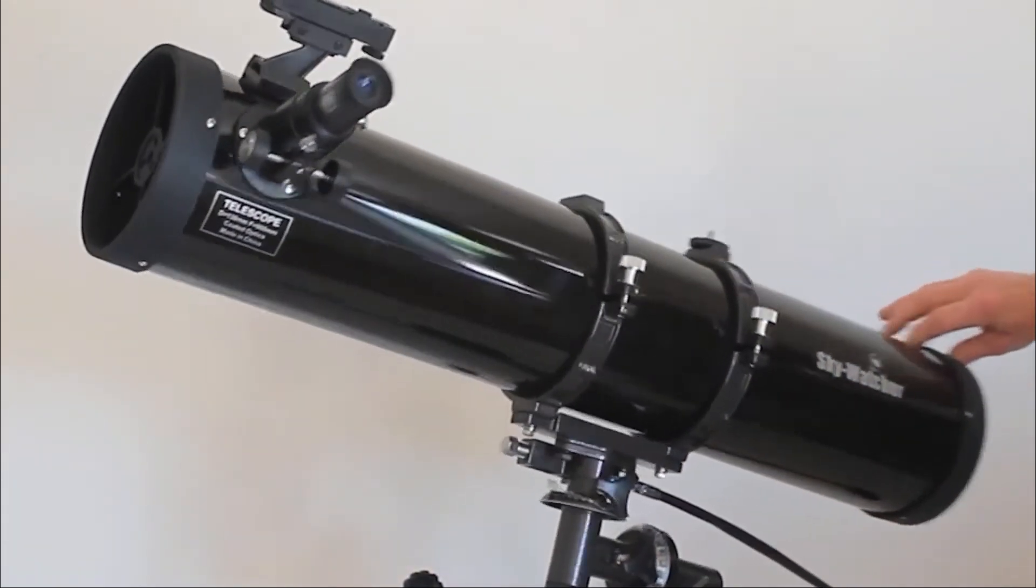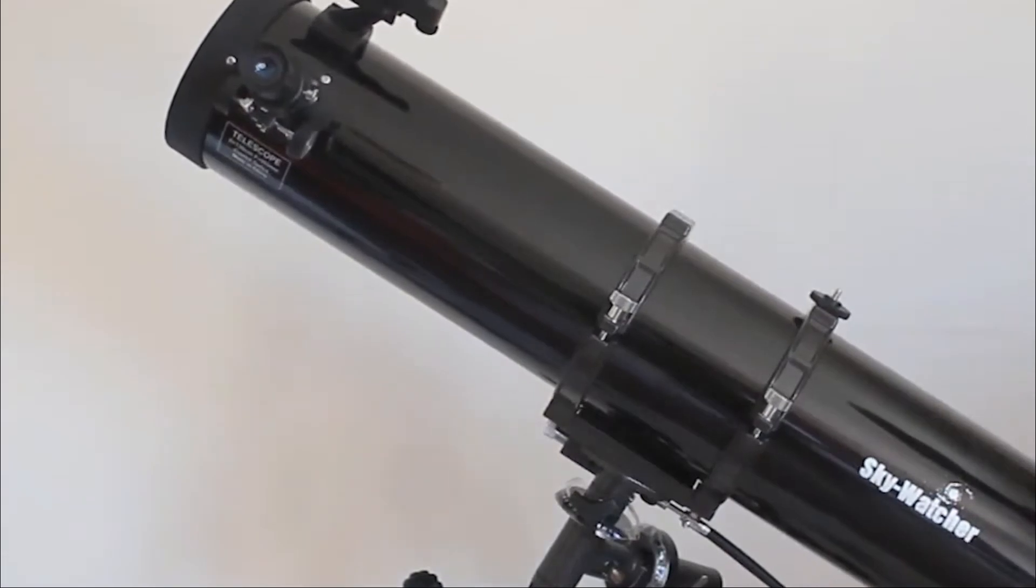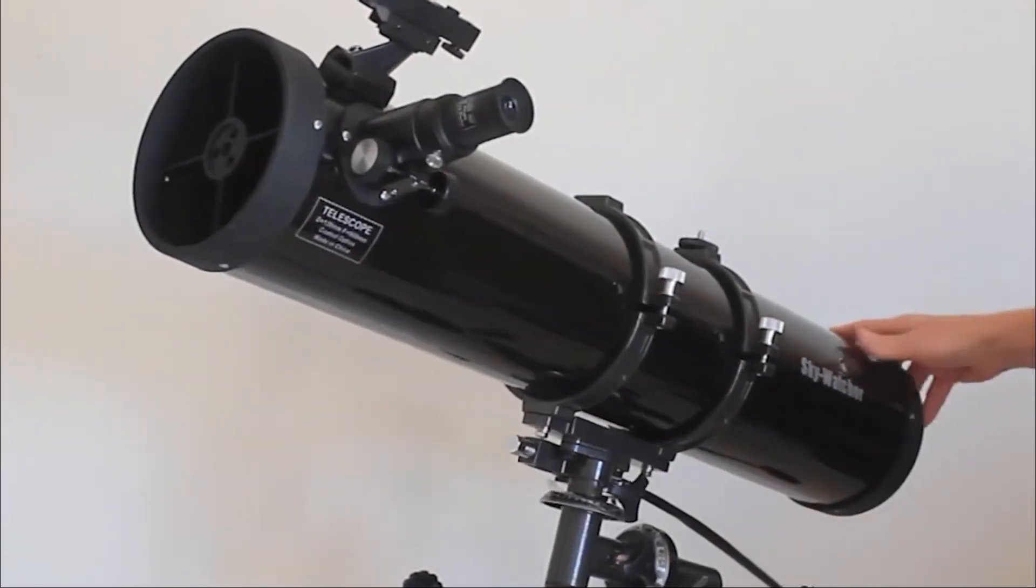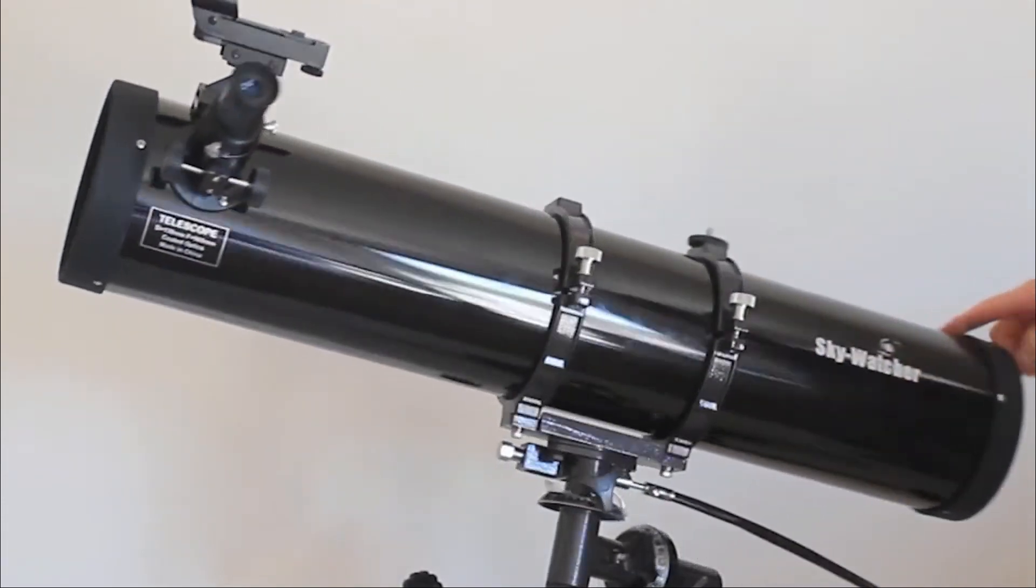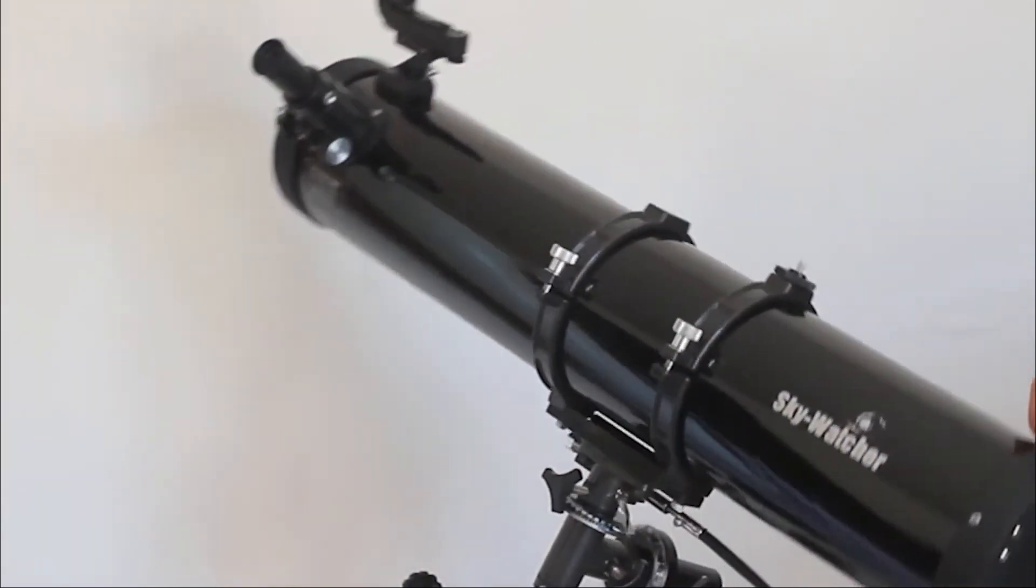And thanks to its red dot type finder, without magnification, the Skywatcher 130-900 Telescope easily targets the area of the celestial object. Then, it centers on the element. Result? A beautiful observation.